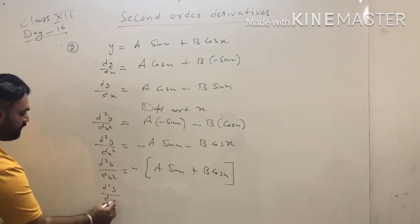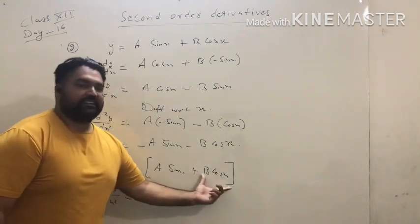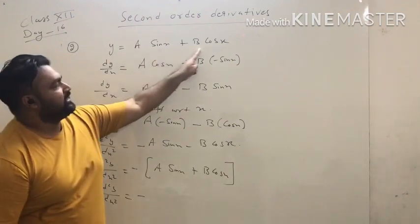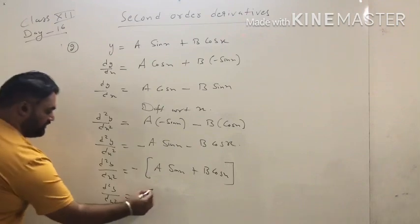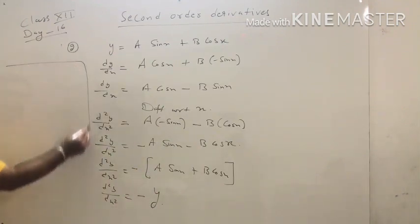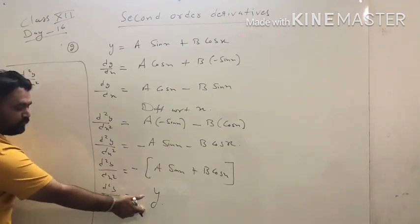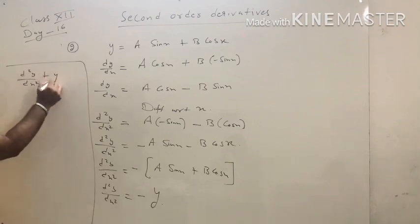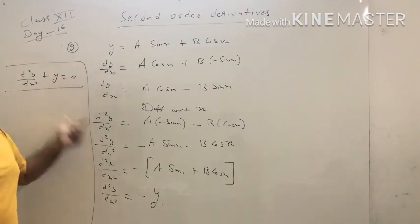So d²y/dx² equals minus(a sin x + b cos x). Now, what is the value of a sin x + b cos x? It equals y. So just substitute: d²y/dx² = −y. Shift this minus y to the left side: d²y/dx² + y = 0. This is the final answer of this question.